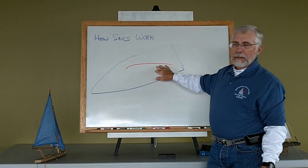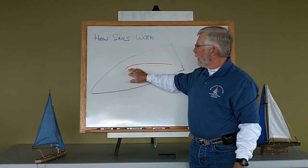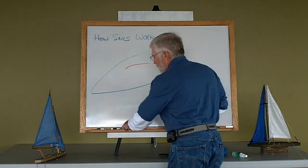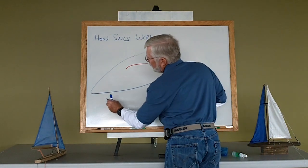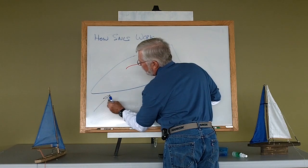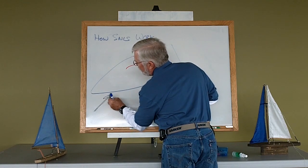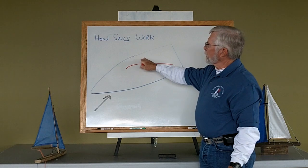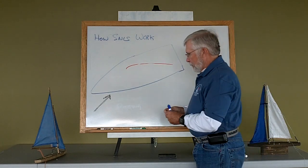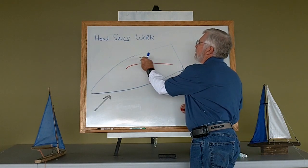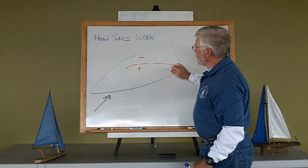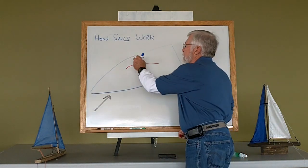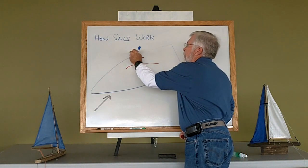When I take that same wing, remove some structure, and put it on my sailboat, I start to have the same effects. The wind coming across my sail creates negative and positive pressure, which creates lift and creates a force in that direction.